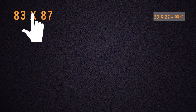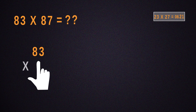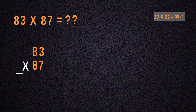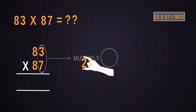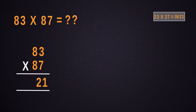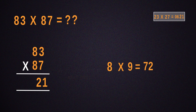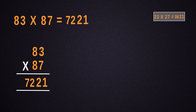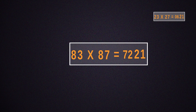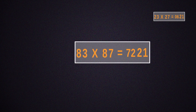Now, multiply 83 by 87. For that, the number obtained by multiplying 3 by 7 will be 21 and that should be put down. Then, multiply 8 with its next number, which is 9. Place the result next to 21 and we get 7,221 as our answer.